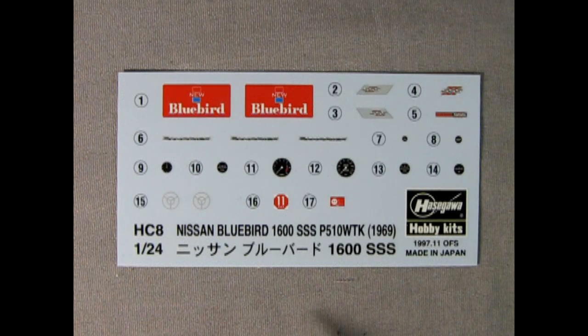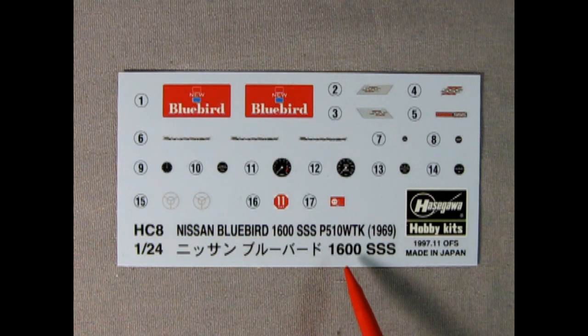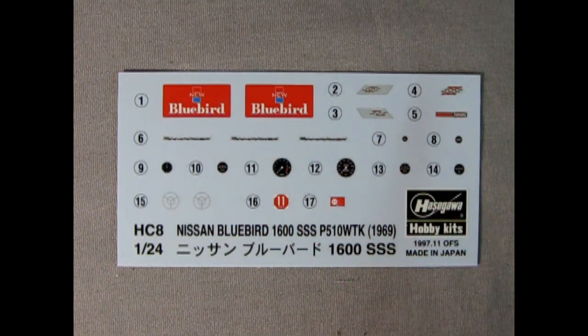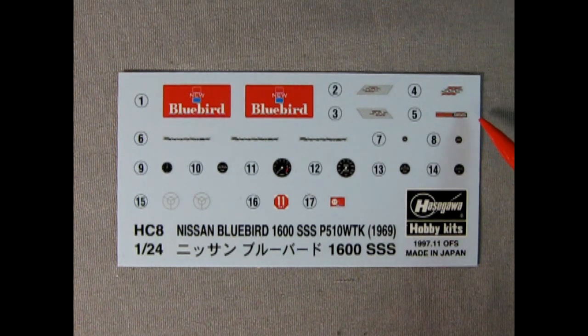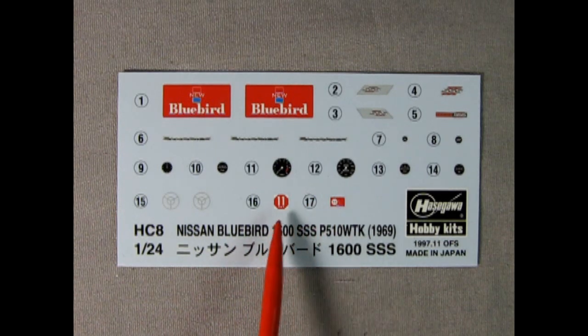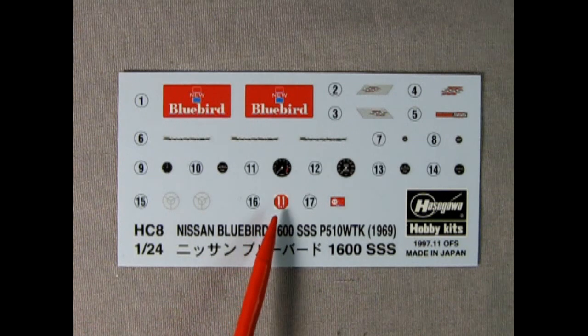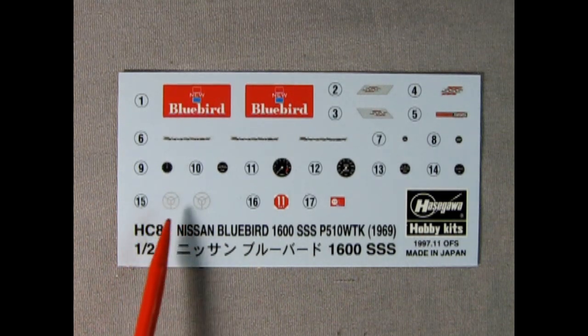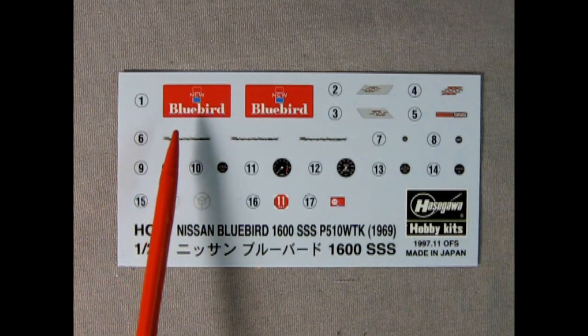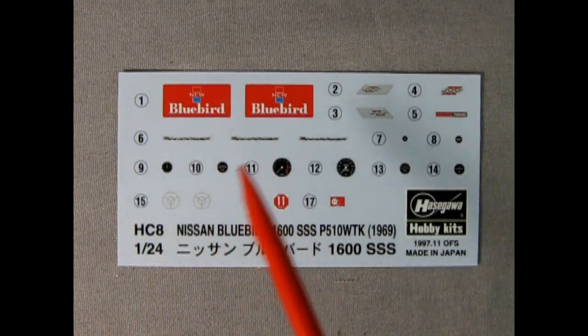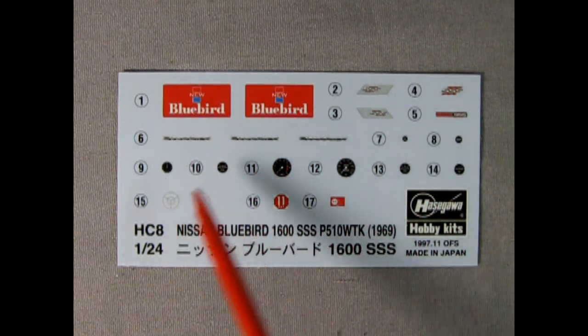Here we have our decal sheet for our Nissan Bluebird 1600 SSS P510 WTK from 1969. We've got our Bluebird license plates which you can put on the front of the car. We also have decals for those little chrome pieces on our C-pillars. There's one for the front grille as well as side script, or I think that's on the trunk lid. These are the side scripts. Then here we have all our gauges for our dashboard as well as these window stickers. I've never seen this over here in Canada. I think these are registration tags from Japan. Let me know in the comments. We also have the little vent decals for the front of the dashboard. I have seen numerous Japanese license plates in very different kits. You could also use those if you want numbers and make it street legal, or put on North American decals from your decal collection, or whatever you choose. It's all up to you.